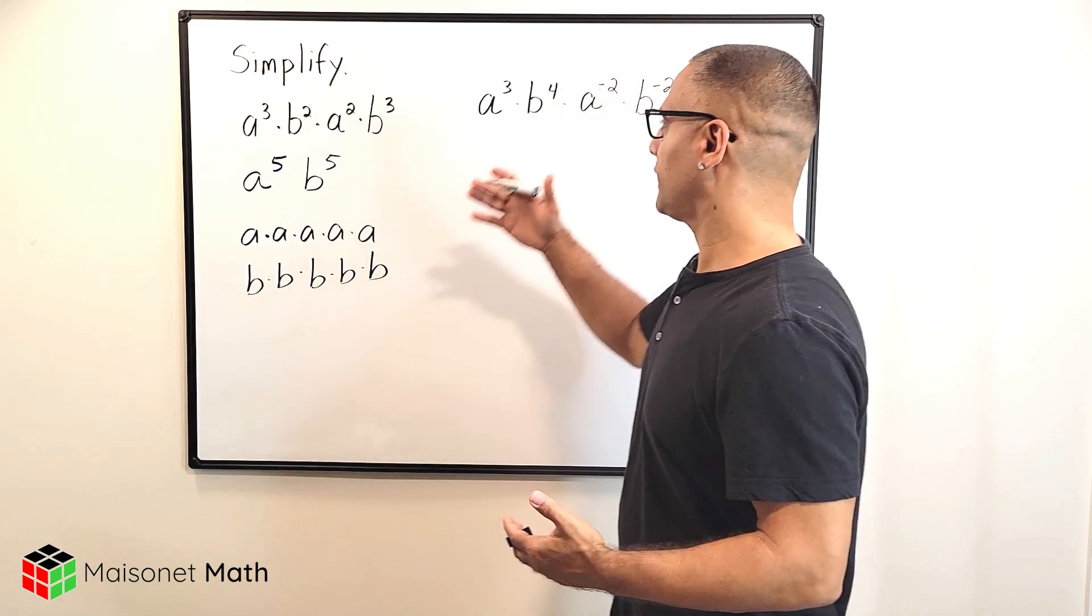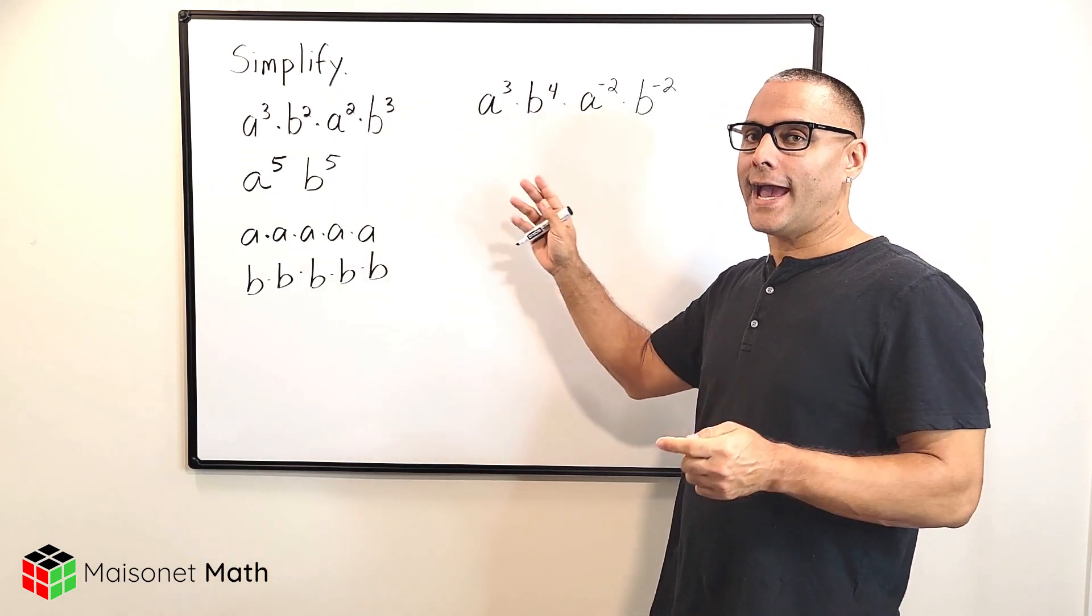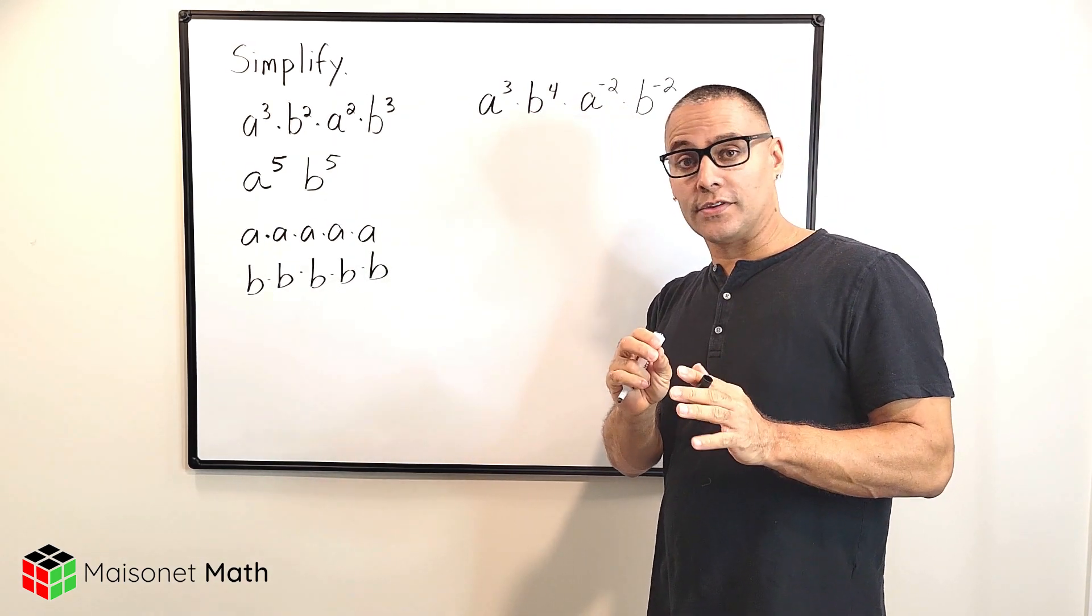Alright, let's take a look at the second example here. So notice that this time we have some negative exponents, but we still follow the same rule.